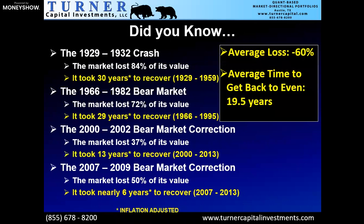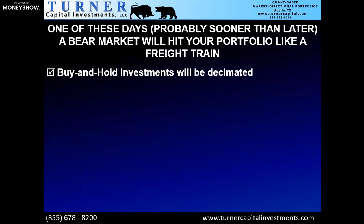If the market drops 50% and your portfolio drops 50%, and then the market comes back at 10% per year thereafter — which is no small accomplishment — it takes you 7.2 years to get back to even. So ask yourself: how many 7.2-year periods do you have left to try to get back to even? You don't want to throw away 7.2 years getting back to even.